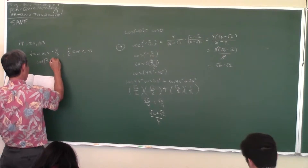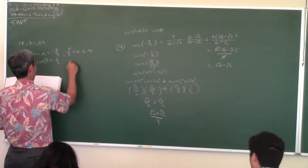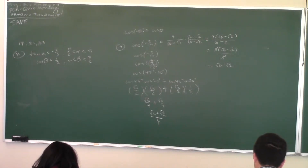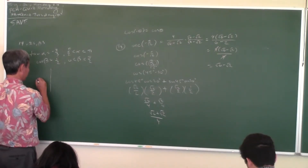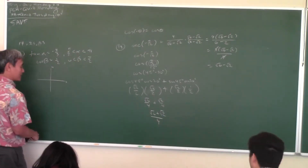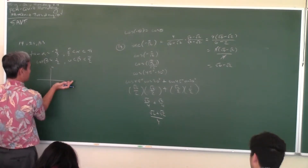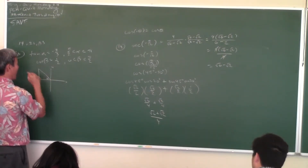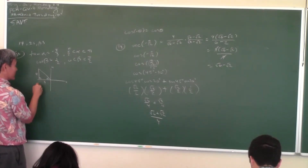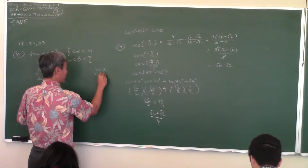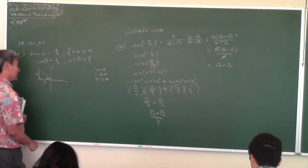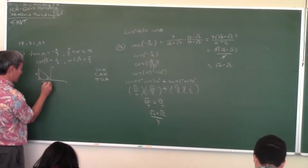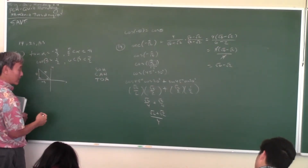Okay, tangent of α equals negative 4 thirds, and α is between π over 2 and π — so this is the one where you draw the triangle in the proper quadrant. Cosine of β equals 1 half, and β is between 0 and π over 2. So the first thing you do is draw the triangles in the proper quadrant. If α is between π over 2 and π, that's the second quadrant. Draw your triangle in the second quadrant. Tangent is opposite over adjacent — write SOH-CAH-TOA if you need to. The hypotenuse is always positive. It's a 3-4-5 triangle.